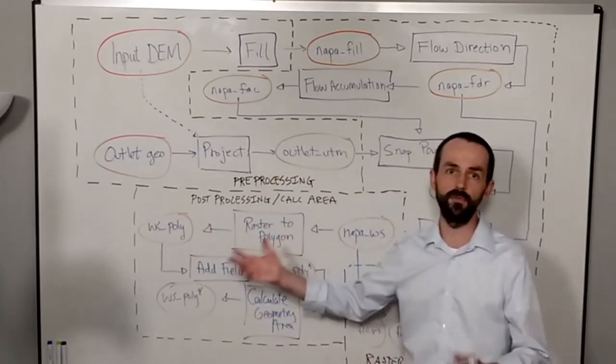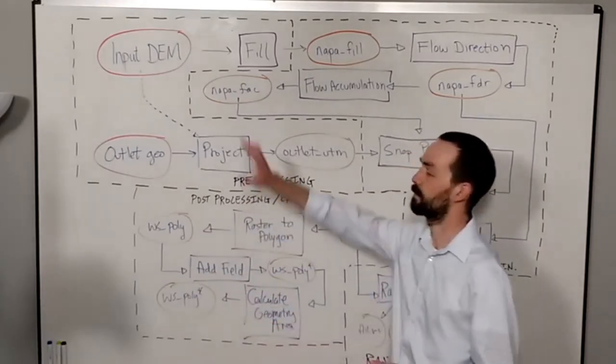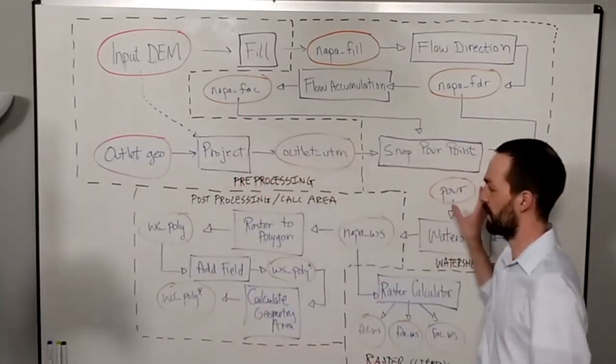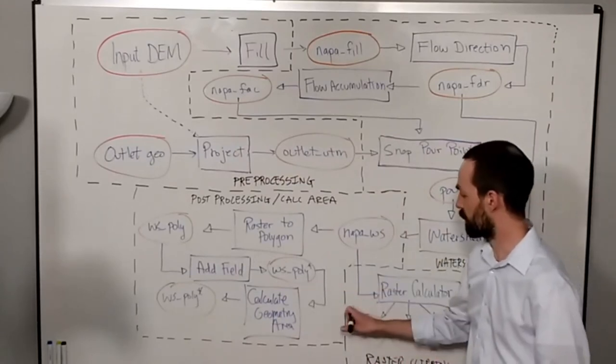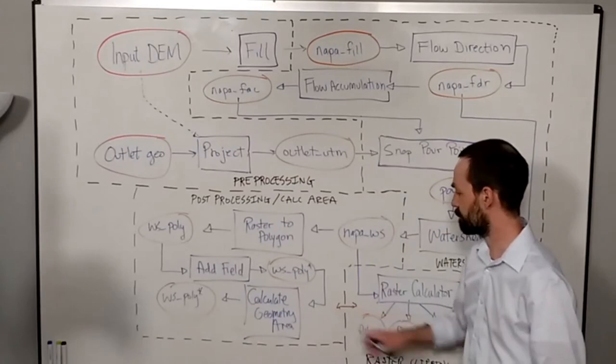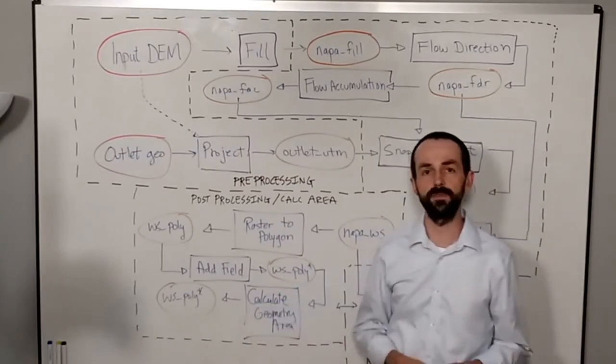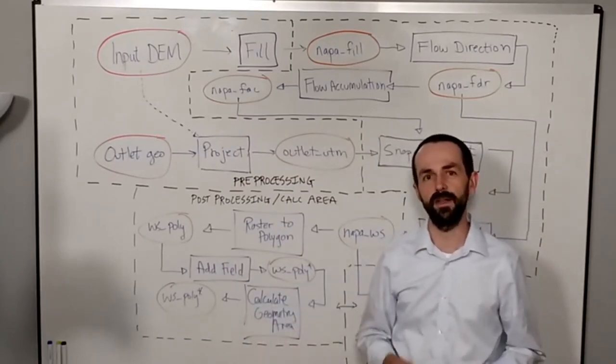Now we've really taken a full process and broken it down into preprocessing, our main process, an extra clipping process which may also be part of this post-processing, and the actual post-processing, which was calculating area.